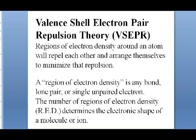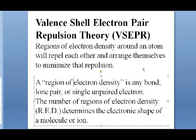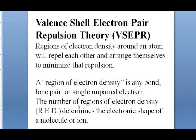Regions of electron density around a central atom repel each other in ways that minimize repulsion. A region of electron density is any bond, lone pair, or single unpaired electron on the central atom. The number of regions of electron density — which I'll abbreviate RED — determines the electronic shape of a molecule or ion.